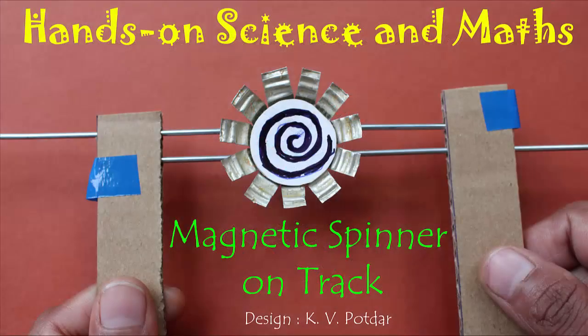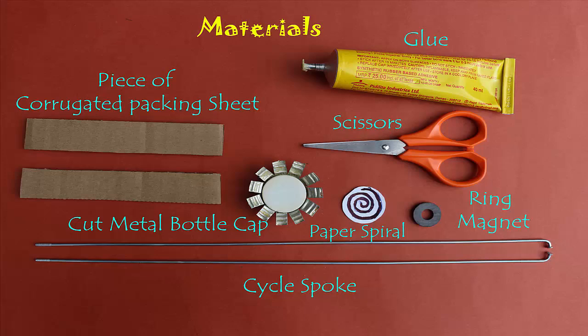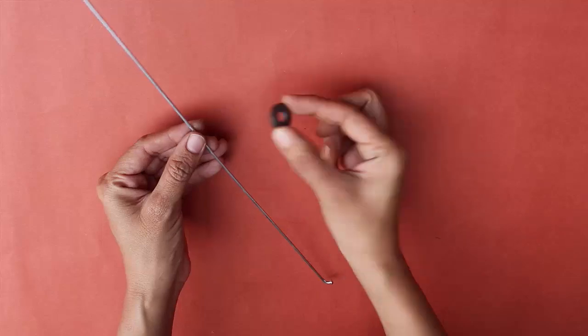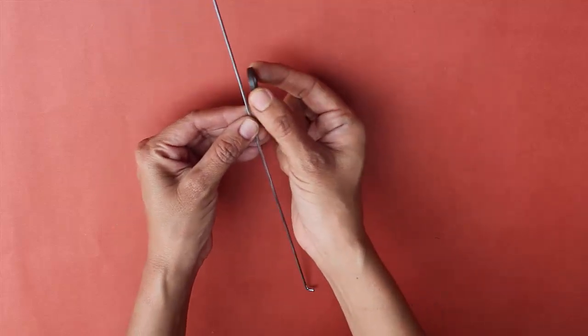To make this spinning magnetic star, you need two pieces of corrugated board, a cut metal bottle cap, paper circle with spiral, two cycle spokes, ring magnets, scissors and glue.